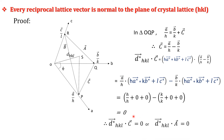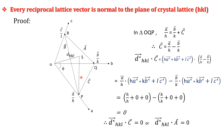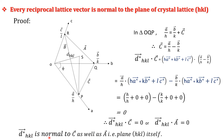Therefore d* hkl · vector c = 0, and similarly d* hkl · vector a = 0. This shows that d* hkl is normal to both vector c and vector a, which lie in the plane p q r. Hence d* hkl is also normal to the plane hkl itself — and that completes the proof of the first property.